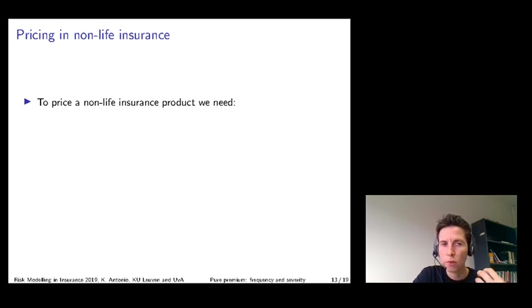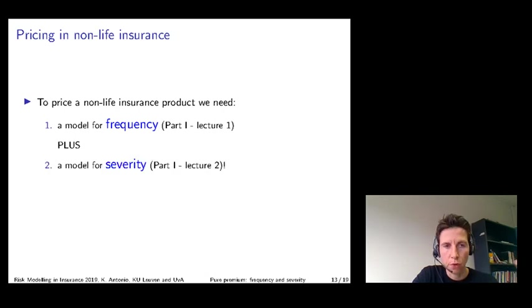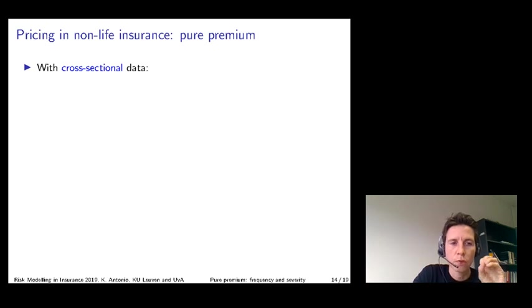To calculate this pure premium or risk premium, you will combine an estimate of the expected claim frequency with an estimate of the expected severity on a claim. These are the two ingredients that you need. Once again, we see that the risk models for frequency and severity data are highly important. Let's reflect how both loss models will be combined into a tariff structure, how this pure premium is constructed.